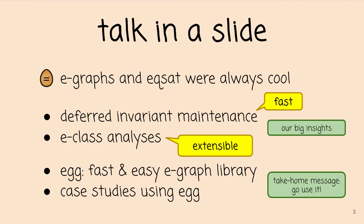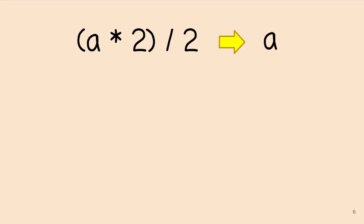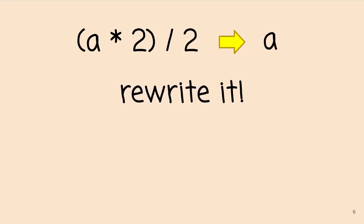Let's get started with some background. Term rewriting is the bread and butter of a lot of things we do in programming languages, whether it's optimization — turning one term into an equivalent but better term — or equivalence checking, wherein you have two terms and you want to check whether they're equivalent. For both of these problems, you can solve it by rewriting: rewrite a term into a better term, or rewrite the terms into each other to prove equivalence.